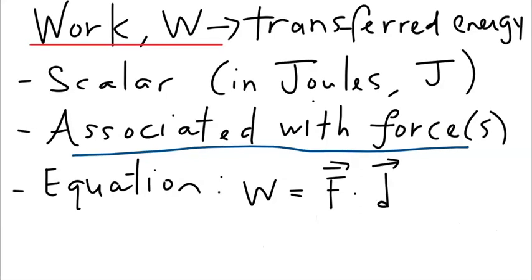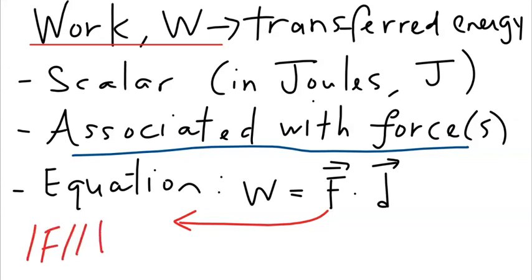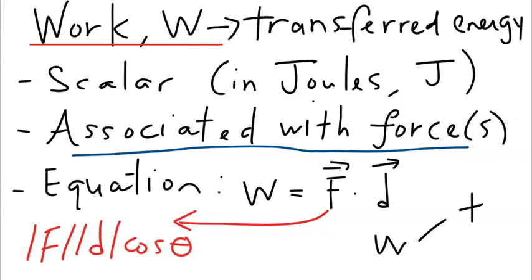From the definition of the dot product, work can also be written as W = |F||d|cos θ, where θ is the angle between the force and displacement vectors. This means work can be positive or negative depending on the relative direction of force and displacement.